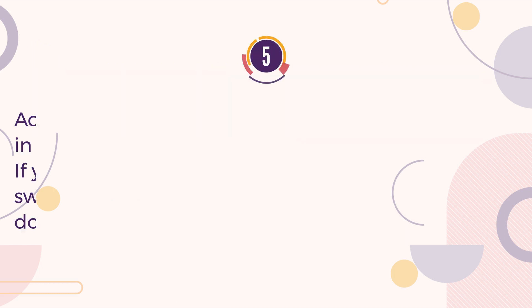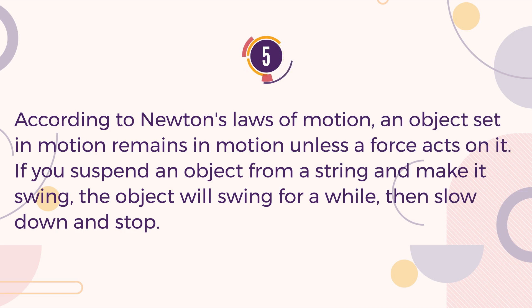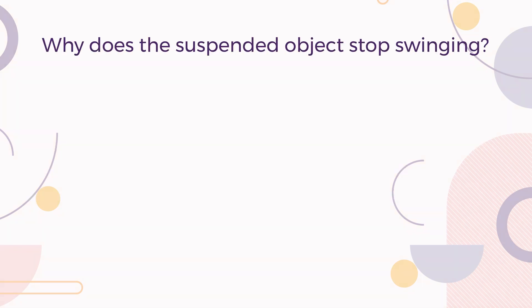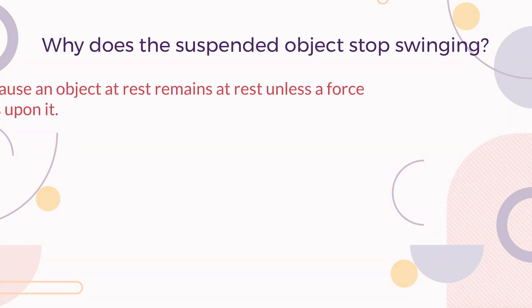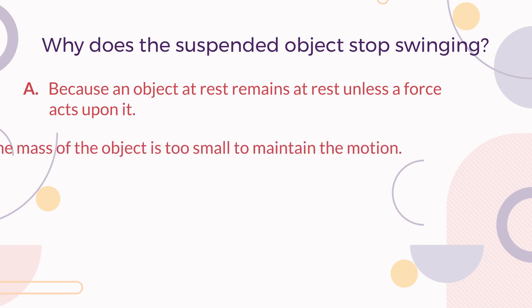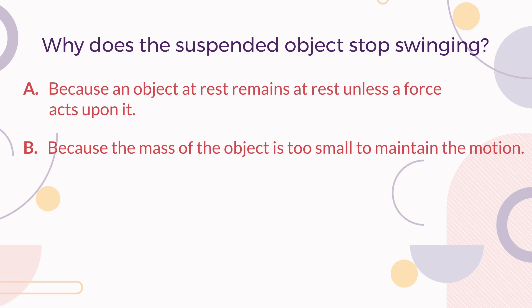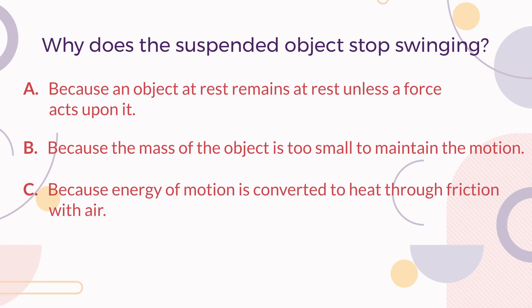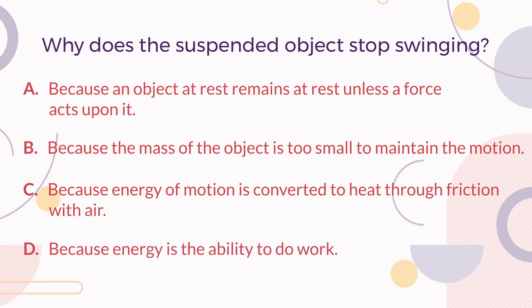Number 5. According to Newton's laws of motion, an object set in motion remains in motion, unless a force acts on it. If you suspend an object from a string and make it swing, the object will swing for a while, then slow down and stop. Why does the suspended object stop swinging? A. Because an object at rest remains at rest, unless a force acts upon it. B. Because the mass of the object is too small to maintain the motion. C. Because energy of motion is converted to heat through friction with air. D. Because energy is the ability to do work.